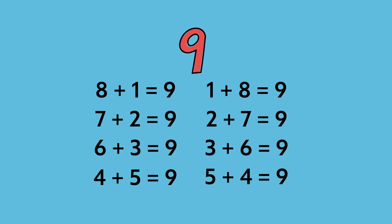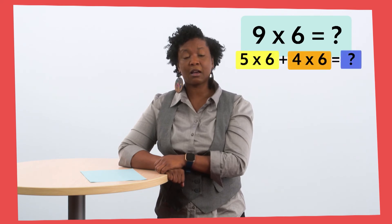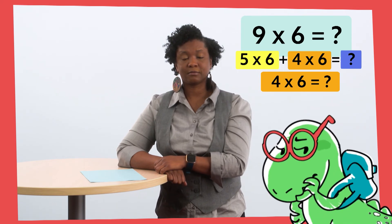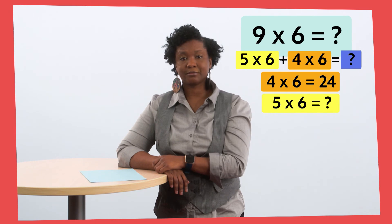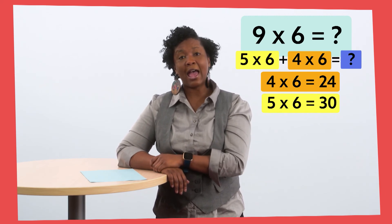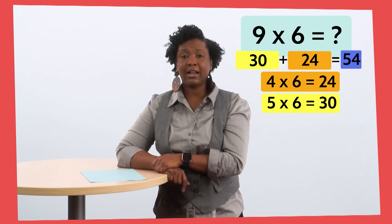Which one should we pick? Which way should we break apart the nine factor so we can solve nine times six? You want to decompose the nine into four and five? That's a great idea — we can do that. Let's rewrite nine times six as five times six plus four times six. What is the product of four times six? That's right — 24. Now, what is the product of five times six? Five times six equals 30. Don't forget, we have to add the two products together to solve the problem: 24 plus 30 equals 54.